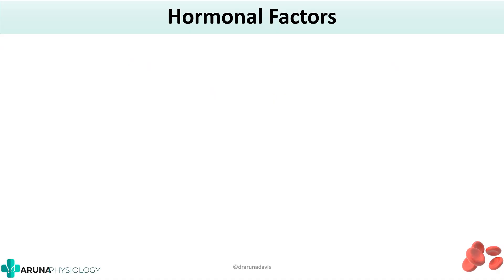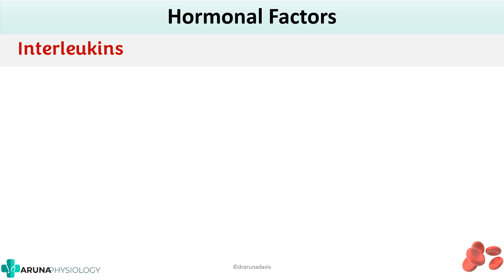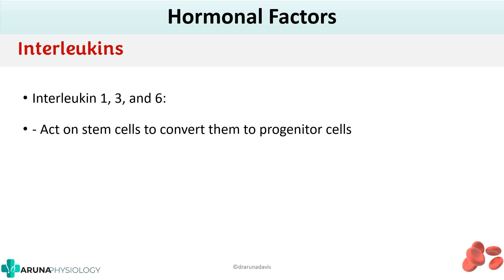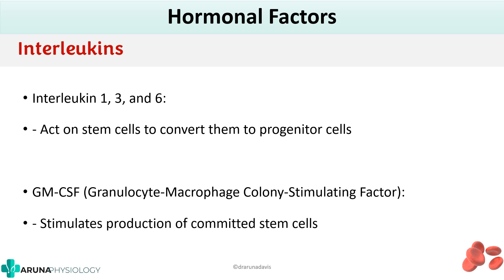Other hormones that can affect erythropoiesis: thyroxin also stimulates erythropoiesis by stimulating erythropoietin production. Growth hormone increases the mitosis and maturation of erythropoiesis precursors. Cortisol is known to produce mild erythrocytosis. Interleukins — especially interleukin 1, 3 and 6 — act on stem cells and convert them into progenitor cells, playing a specific role in the erythroid series. GM-CSF (granulocyte macrophage colony stimulating factor) also stimulates the production of committed stem cells. That would complete our hormonal factors.